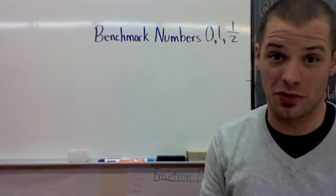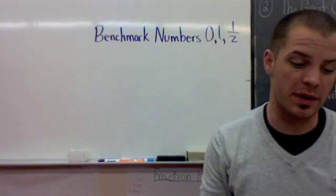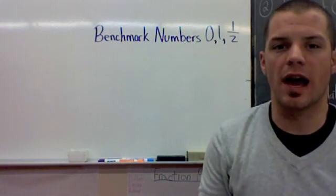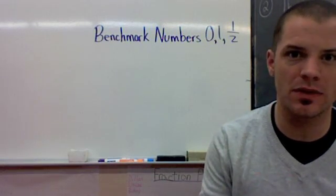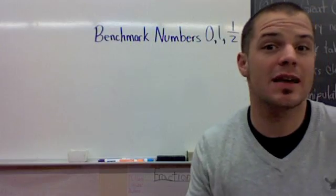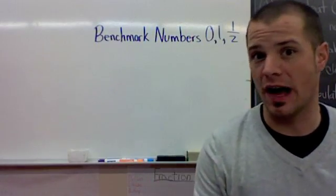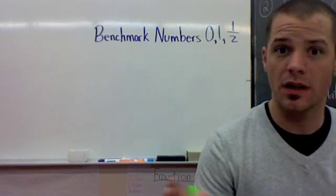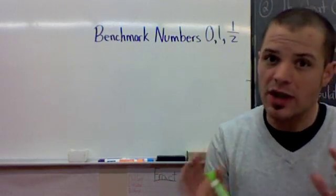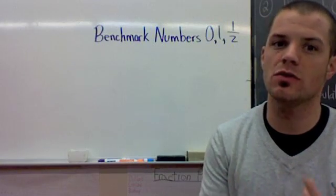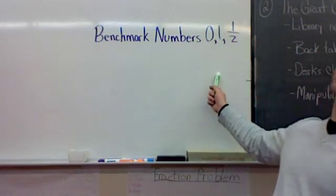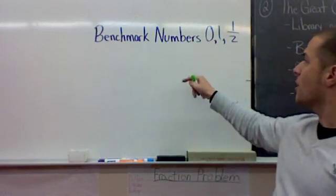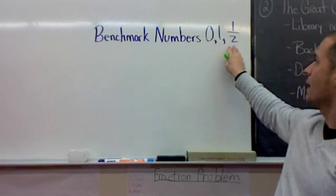Here comes principle number three. This is a very important one. Because what happens if I give you some fractions that are not equal? They don't have the same denominator. They don't have the same numerator. They're completely different fractions. There's nothing in common. Then what do you do? Well, there is a way you can try and figure out. If I give you two numbers, you can try and figure out which one's greater by using benchmark numbers. Benchmark numbers are zero, one, and one-half.